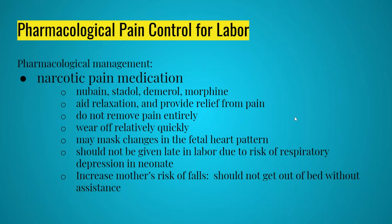Let's start with narcotic pain medication. The old standby agents you might see used are Nubain — that's nalbuphine — which is a narcotic agonist and antagonist. We also have Stadol, and then Demerol or morphine. Demerol has fallen out of favor; it's really not that effective for pain relief, but it was given formerly a lot in labor and delivery.